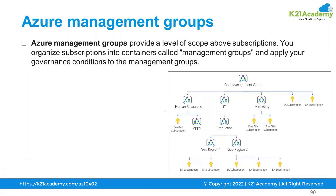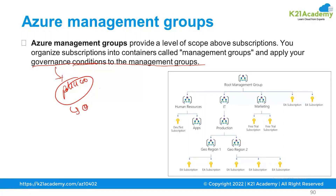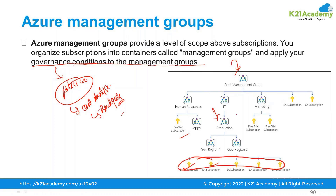Azure management groups provide a level of scope above subscriptions. You organize subscriptions into containers called management groups and apply governance conditions — such as policies and cost analysis budgets — to the management group. If you apply a policy on the root management group, it gets applied to everything. If you apply it on a production management group, it only affects the subscriptions inside that production group.